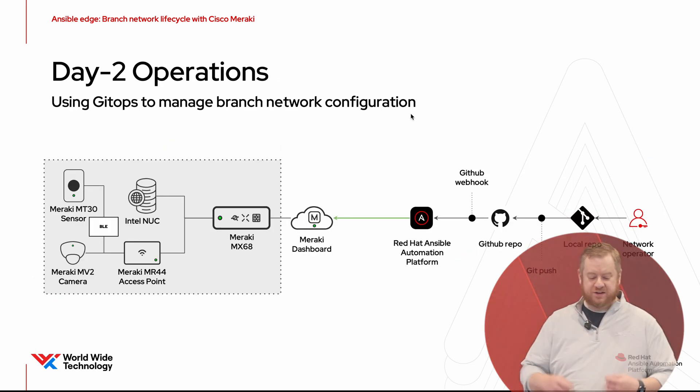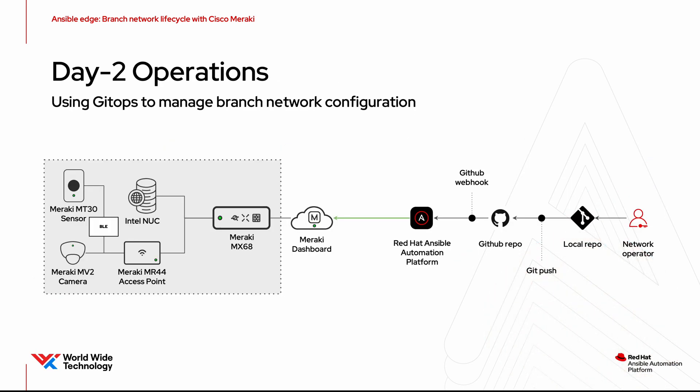When we talk about day two operations, because this is managed as code, we're going to use GitOps to manage the configuration of this site. As a network operator, I've got a copy of the repository cloned down to my workstation. I'm going to make a change via data, push it into Git, go through a pull request process, and then that will trigger the automation that runs and affects the change on the infrastructure.